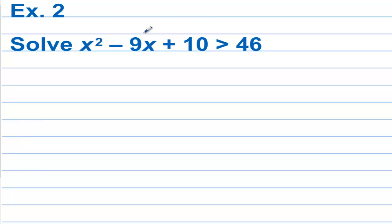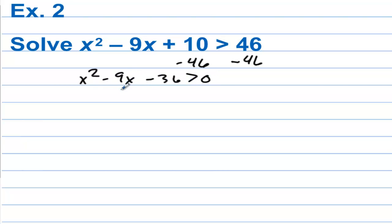Example 2: Solve this — we're comparing the left side to 46. We don't compare things to 46, we compare things to 0. So let's subtract 46 from both sides, and that's going to be greater than 0. Let's factor: we have (x minus 12)(x plus 3) is greater than 0. Now let's find the values that would make this thing exactly 0.